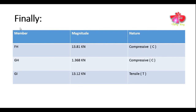Finally, we present a summary table of the results: member FH has a magnitude of 13.81 kN and is compressive; member GH has a magnitude of 1.368 kN and is compressive; member GI has a magnitude of 13.12 kN and is tensile. This is how we find member forces in a given truss using the section method.